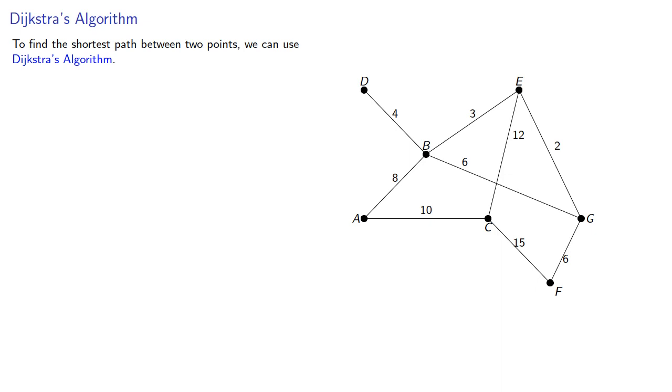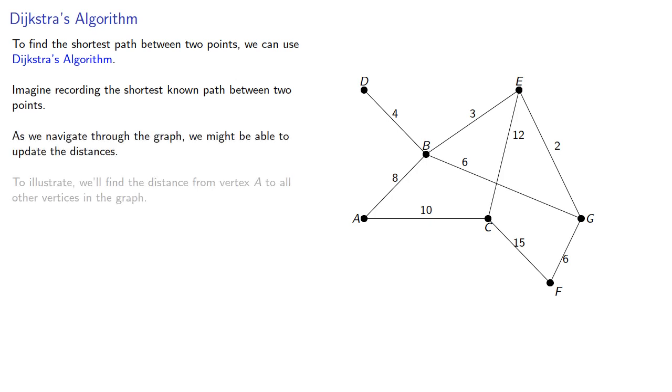So imagine recording the shortest known path between two points. As we navigate through the graph, we might be able to update the distances. To illustrate, we'll find the distance from vertex A to all other vertices in the graph.